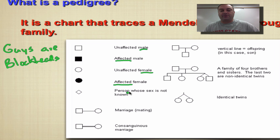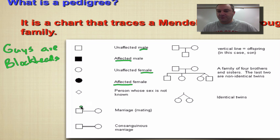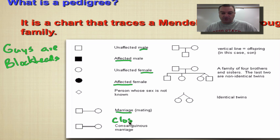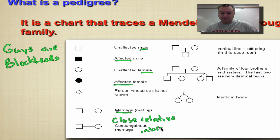Some other symbols you'll occasionally see in a pedigree: if we're doing a family tree and a couple had a baby but we can't figure out the sex — maybe it was someone from two or three generations ago and there's no documentation — we just use a diamond. A line between a square and a circle is called a marriage line, meaning they're married and going to have offspring. Two lines between a couple indicates they're consanguineous, meaning they're very close relatives — basically inbreeding.